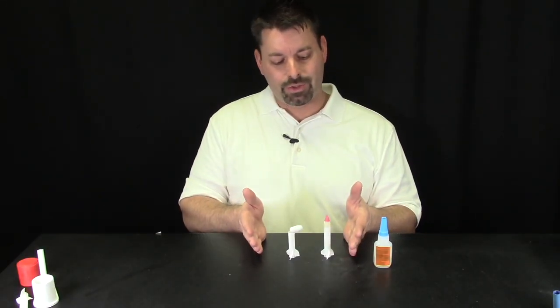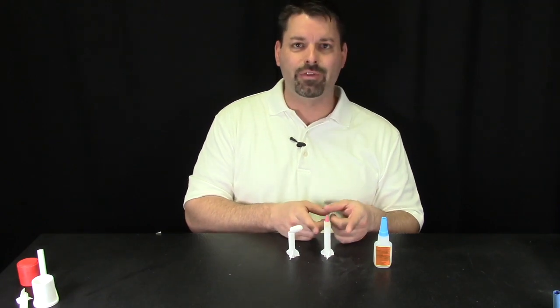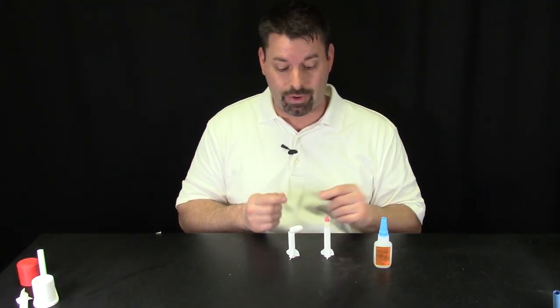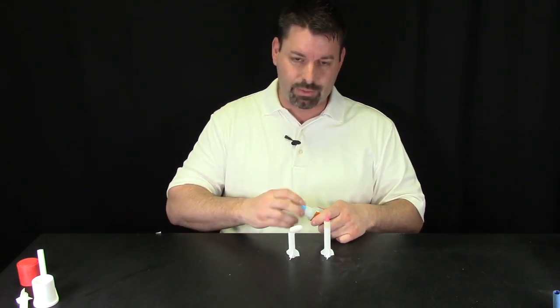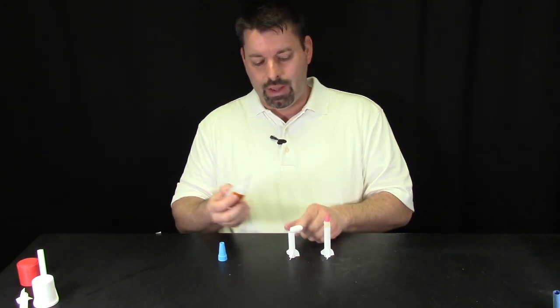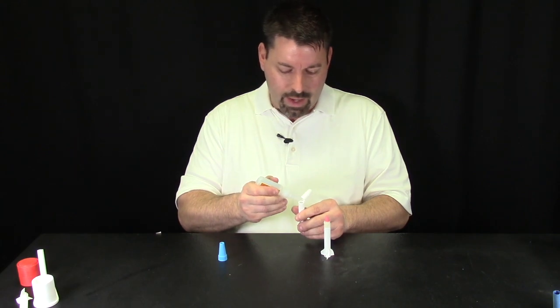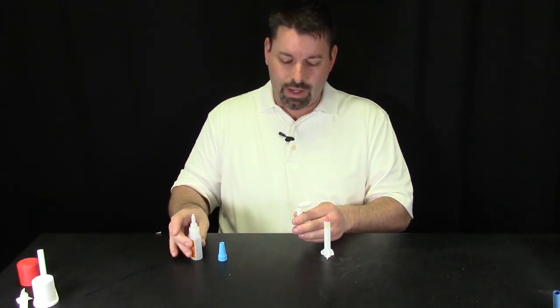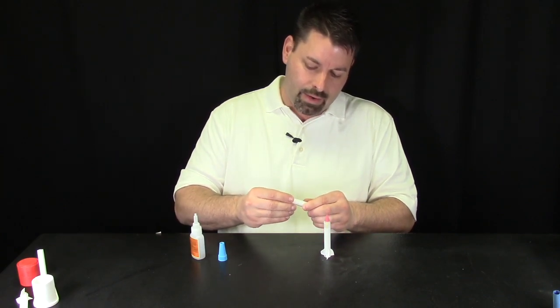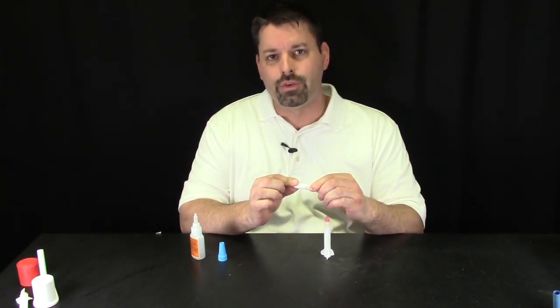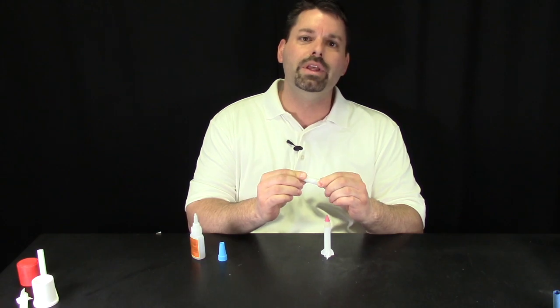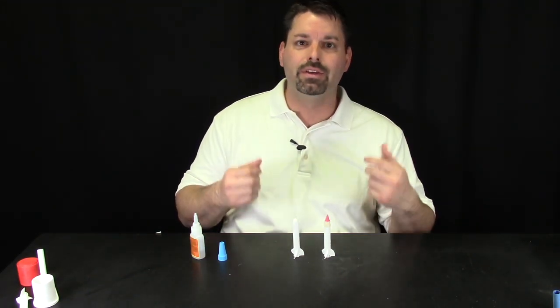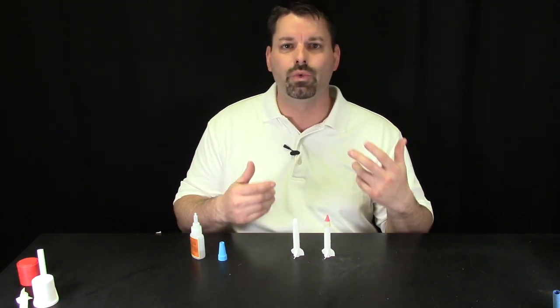So if we compare these two rockets this one did not fly as high as this one. This one actually flew so high it hit the ceiling and broke. Simple fix is we're going to use some super glue. Just put a little bit of super glue around the edge. That's it. And now I just press it and hold it for a few seconds and the bond will be complete. Keep in mind this is exactly what scientists do. They compare things and measure things to see which ones work better.